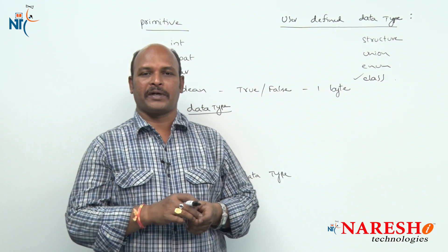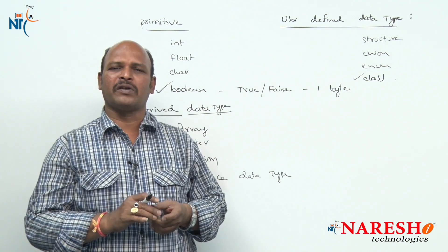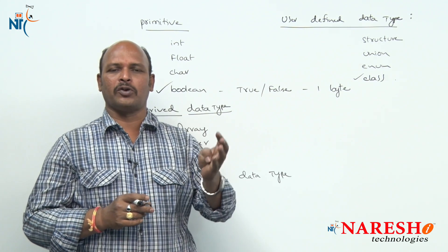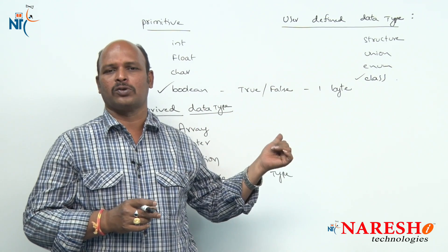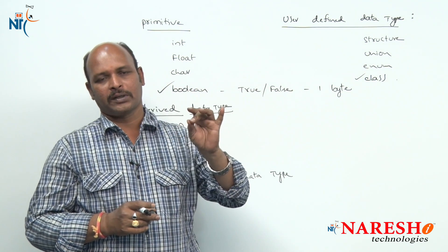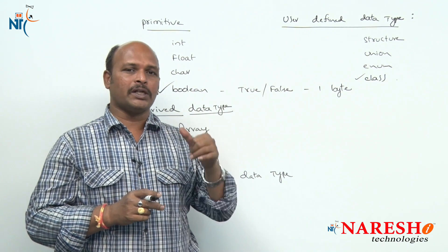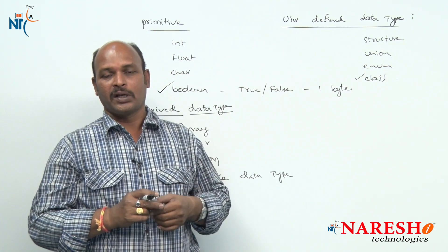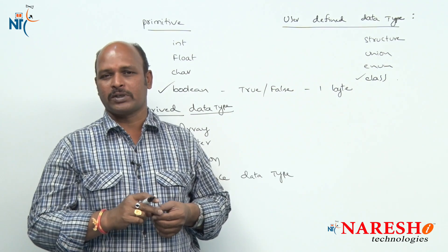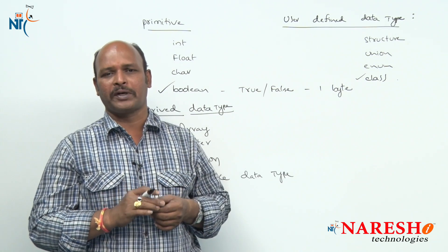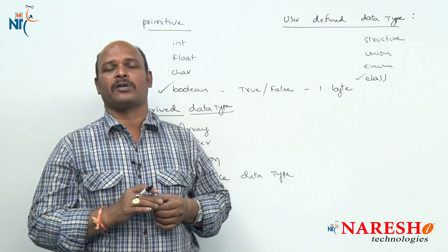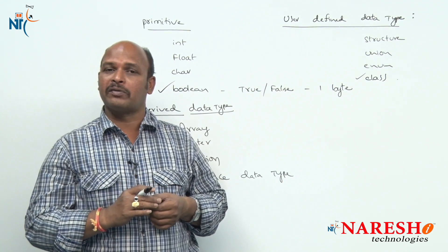Now, what are the operators? Generally in C language we use different kinds of operators. Based on number of operands, we have three types: unary, binary, and ternary. In C++ we use these same types. Based on operation, we have arithmetic operators, assignment operators, relational operators, logical operators, combined assignment operators, increment/decrement operators, and bitwise operators.